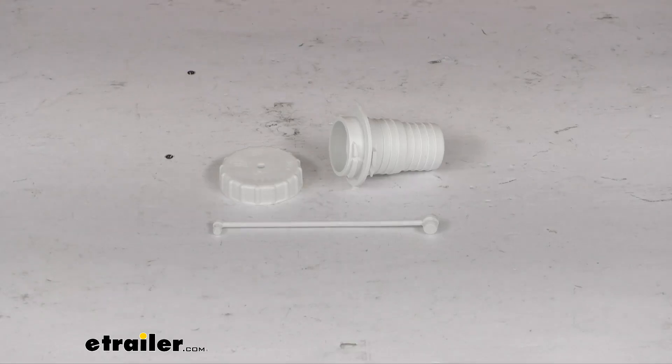And again, this is going to replace the RV gravity fill cap, strap, and spout. It works on all BNB gravity fill dishes, as well as the gravity hatches that use this style of twist-on cap.